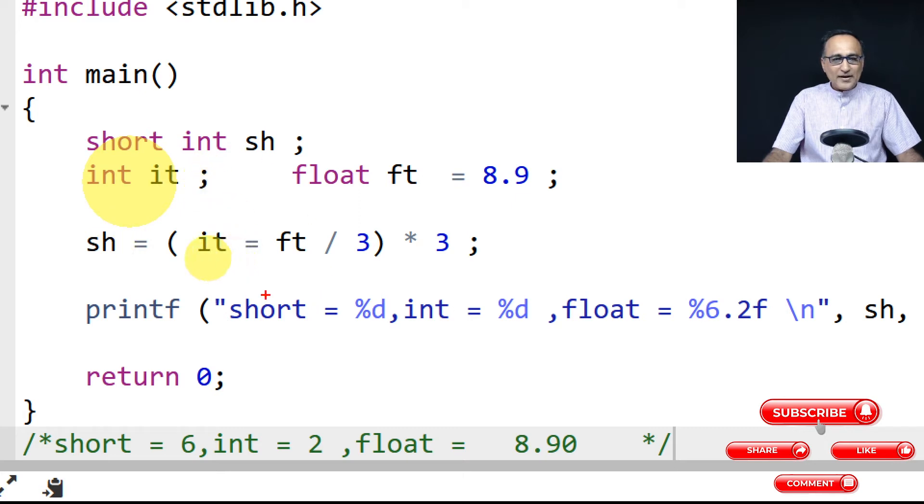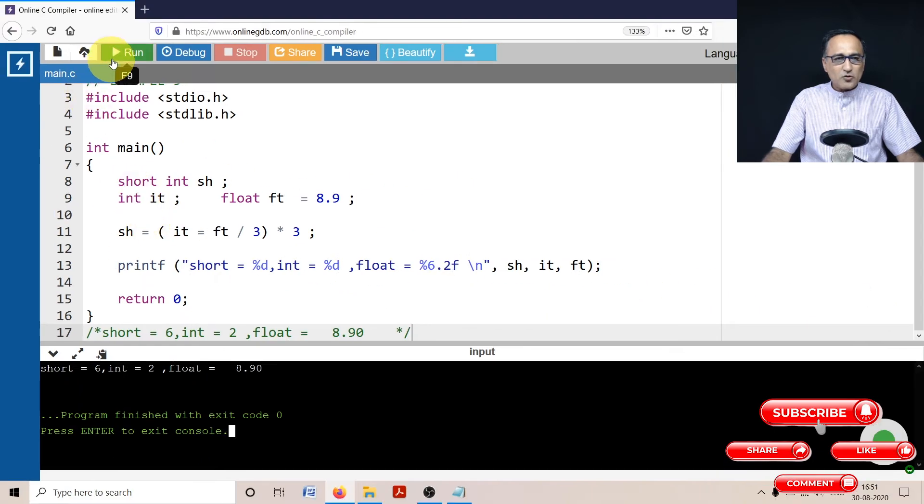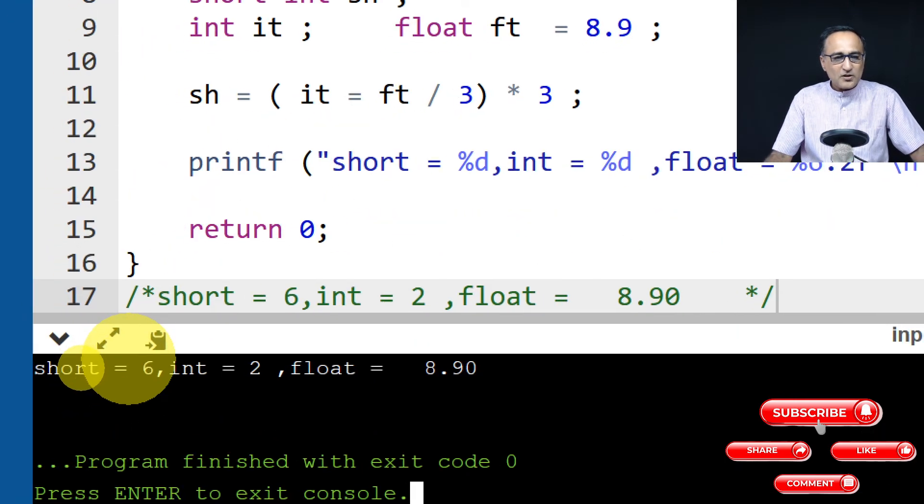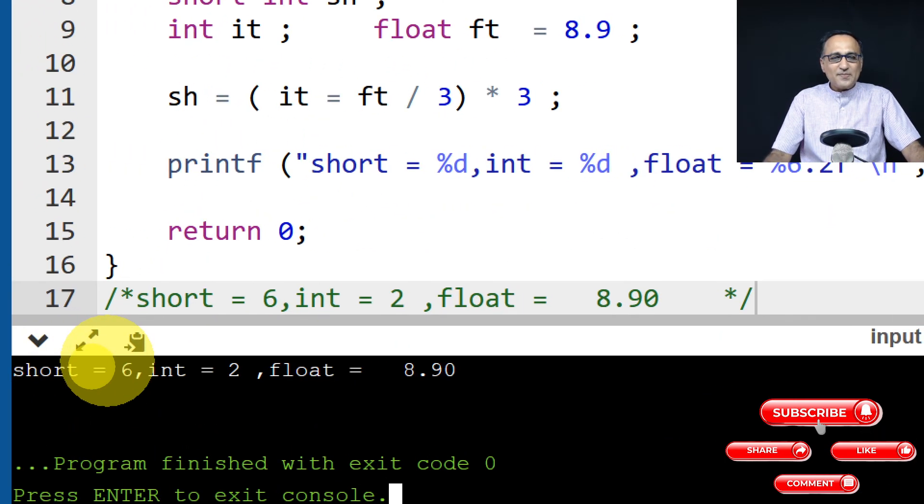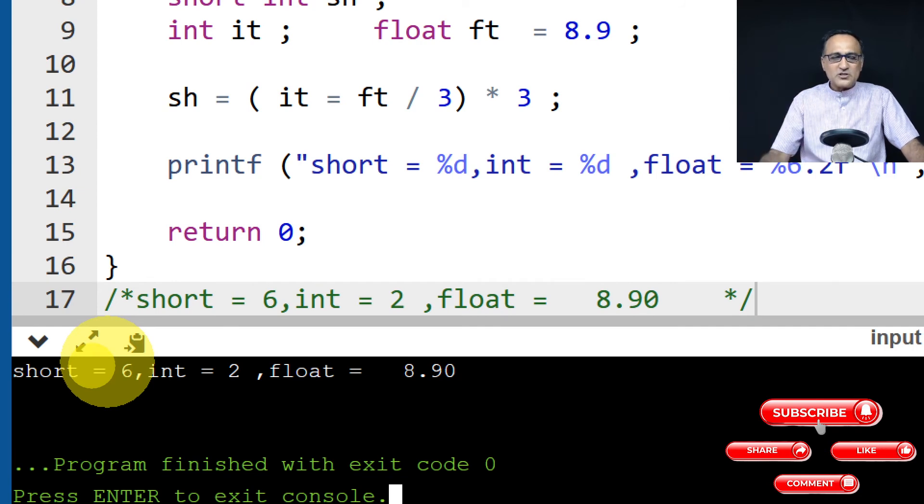So if I go ahead and try to run this particular program, what's going to happen is you're going to see the output which was predicted by me. So here if you take a look at the output, you will have seen that float has remained as it is because we have not done any processing with float.